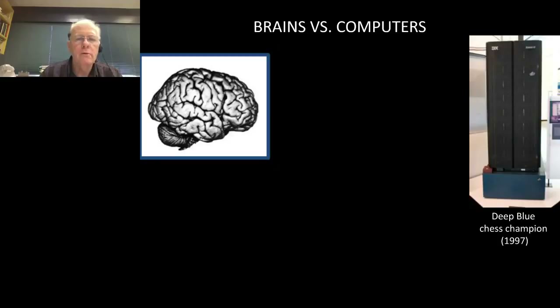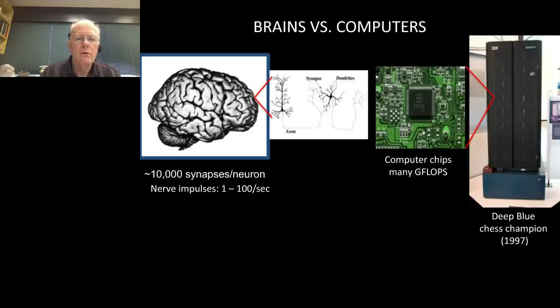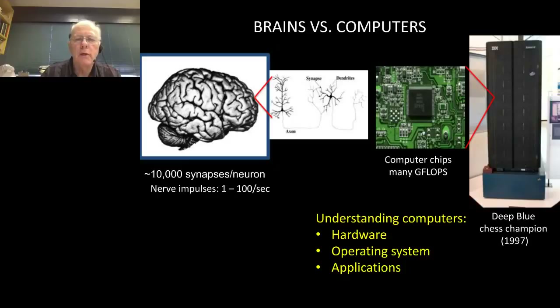A computer operates at vastly greater speeds — billions of operations per second — instead of the 1 to 100 impulses per second for neurons. For the human brain, the challenge is to understand the wiring, the physiological signals, and combine those together to explain behavior.